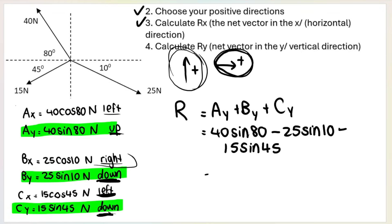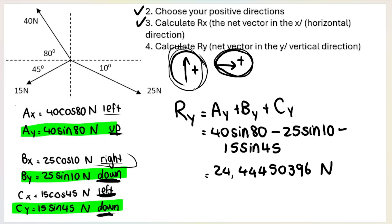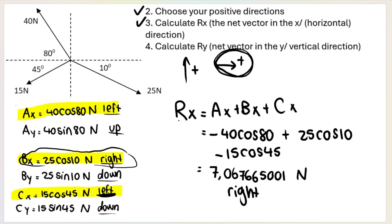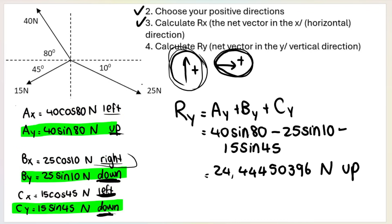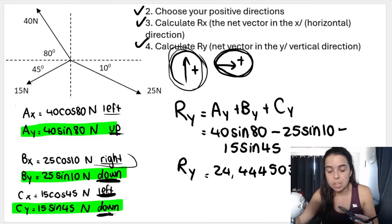Take your calculator and work out R-y. I get 24.4445039... newtons. My calculator gave a positive answer, and I chose up as positive, so R-y is pointing up. Please take note: in step three I did not round off R-x, and I did the same in step four with R-y — I left all decimal places. The rule in physics is not to round off until you get to the end of a question, and steps three and four are the middle of the question.